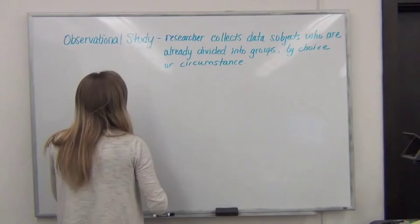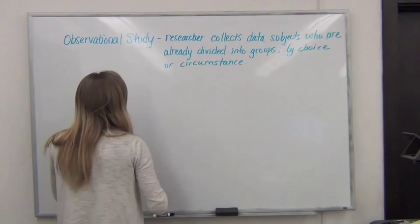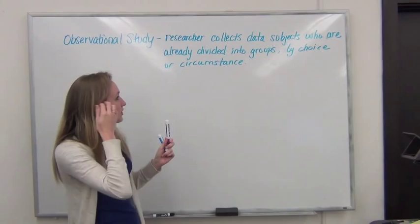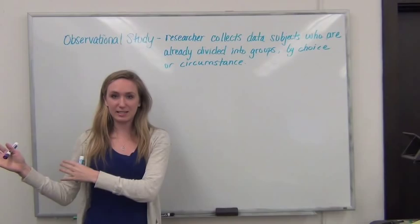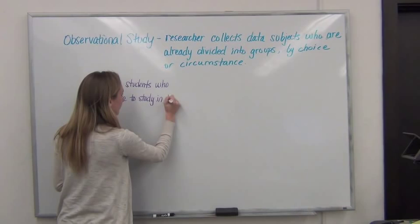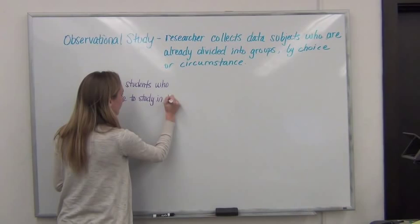With the same scenario that we were working on before, the same theory that you have that studying in the library is better than studying in your dorm room, an observational study would take 50 students who choose to regularly study in the library. That's where they always go. It's just part of their routine. So, 50 students who choose to study in the UGL regularly.